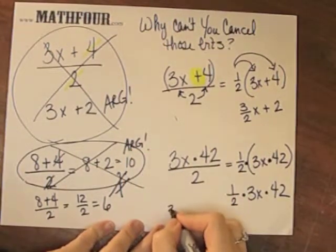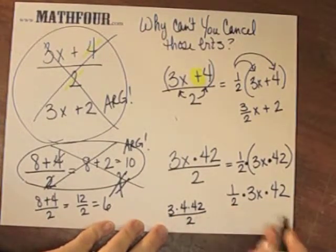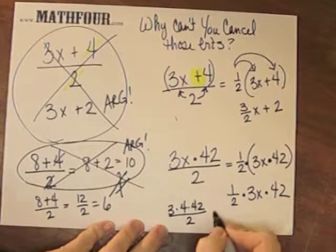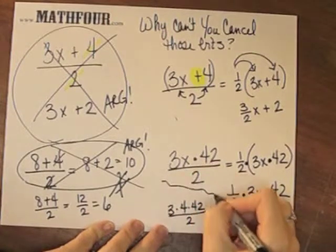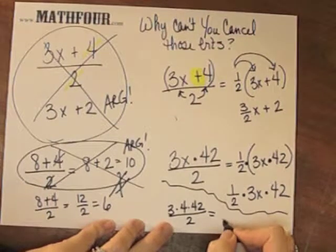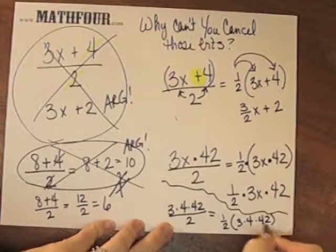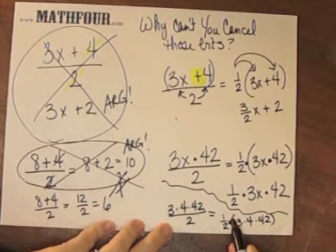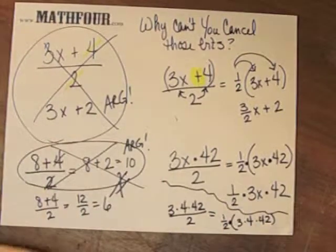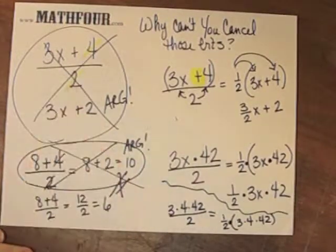Likewise, if I had 3 times 4 times 42 over 2, division and multiplication, wait a minute, we're getting a little squirrely here, so this is like 1 half of 3 times 4 times 42, and again, this is still multiplication, so those parentheses just vanish, and that's why you can't cancel those bits.